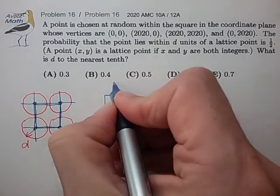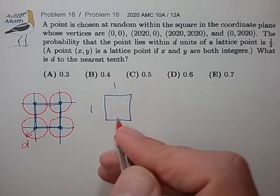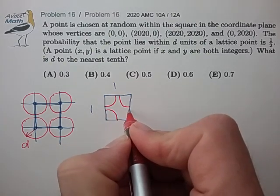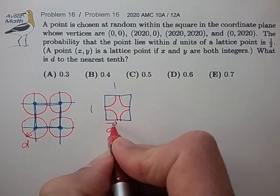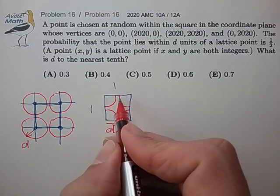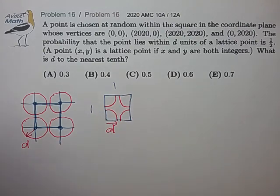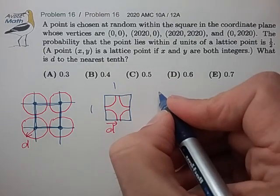So inside this unit square, we have four quarter circles of radius d, and the area of the circle portion is one-half the area of the square. That seems to be the mathematical condition.